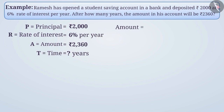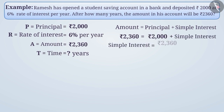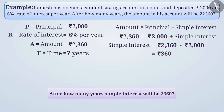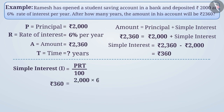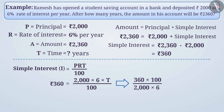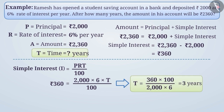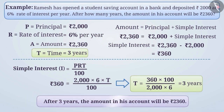Amount is equal to principal plus interest. Therefore, Rs 2,360 = Rs 2,000 + interest. Therefore, interest = Rs 2,360 − Rs 2,000 = Rs 360. To find the number of years, using the simple interest formula: I = P × R × T / 100, so 360 = 2,000 × 6 × T / 100. Solving, T = 360 × 100 / (2,000 × 6) = 3 years. That is, after 3 years, the amount in his account will be Rs 2,360.